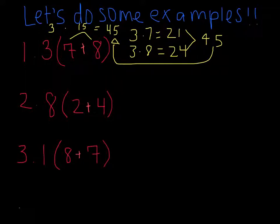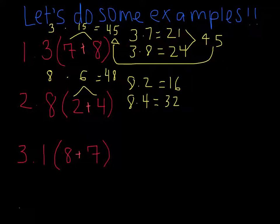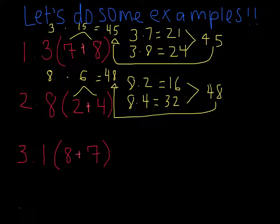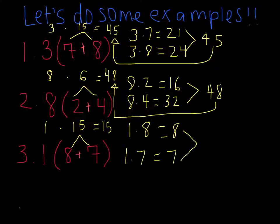For the second one, we have 2 plus 4 is equal to 6. Multiply that by 8, we get 48. Using the distributive property, we have 8 times 2 is equal to 16, and 8 times 4 is equal to 32. 16 plus 32 is 48 — the same answer. For the last one, 8 plus 7 is equal to 15. Multiply that by 1, we get 15. Using the distributive property, 1 times 8 is equal to 8, and 1 times 7 is equal to 7. 7 plus 8 is equal to 15 — same answer.